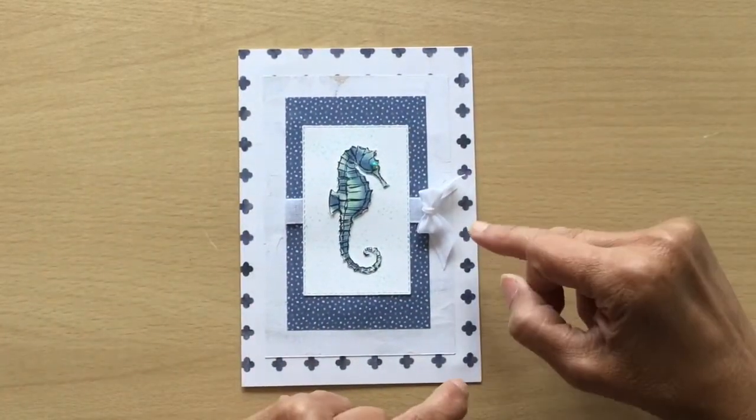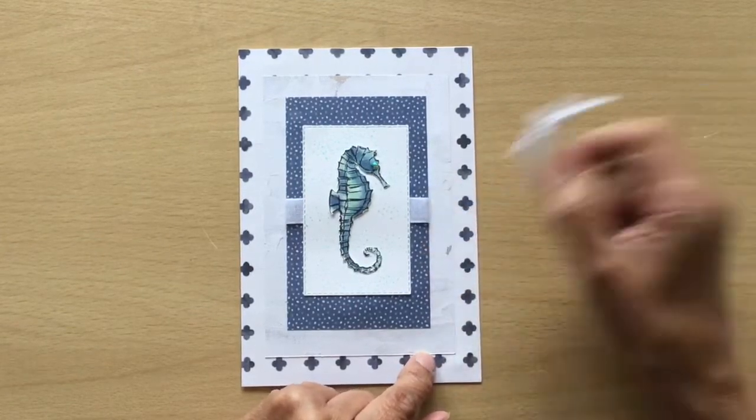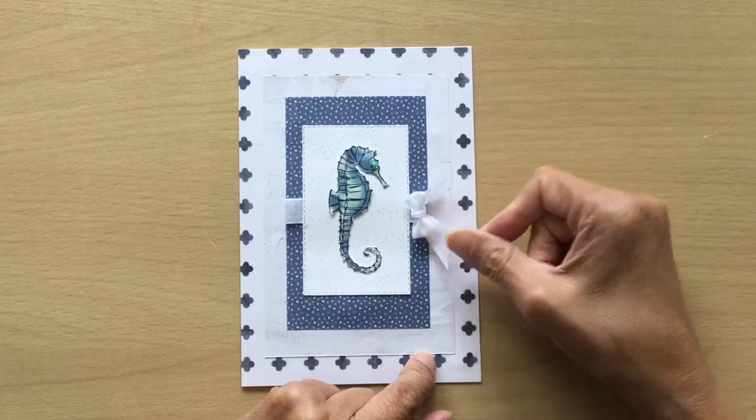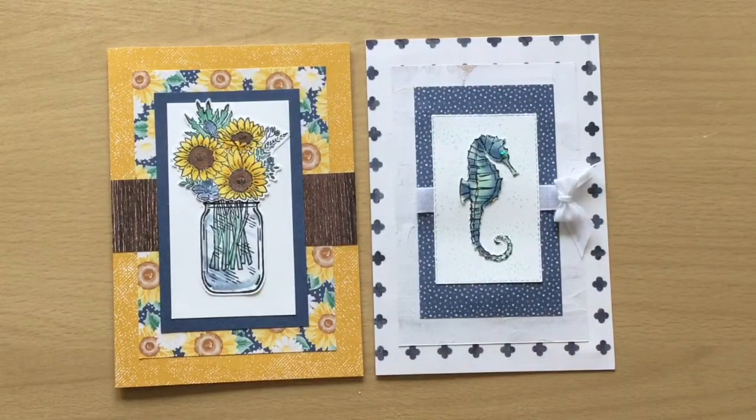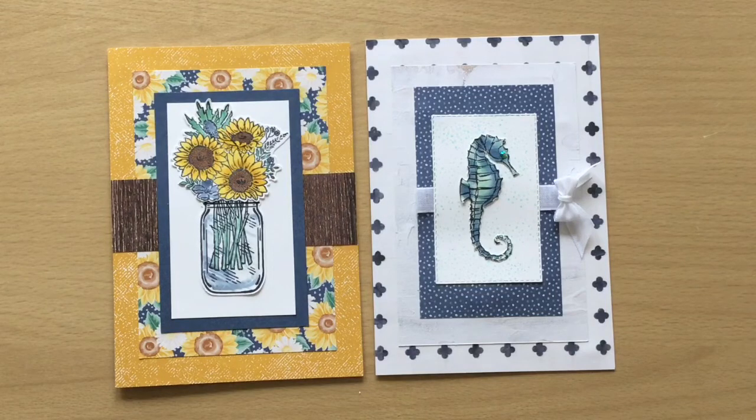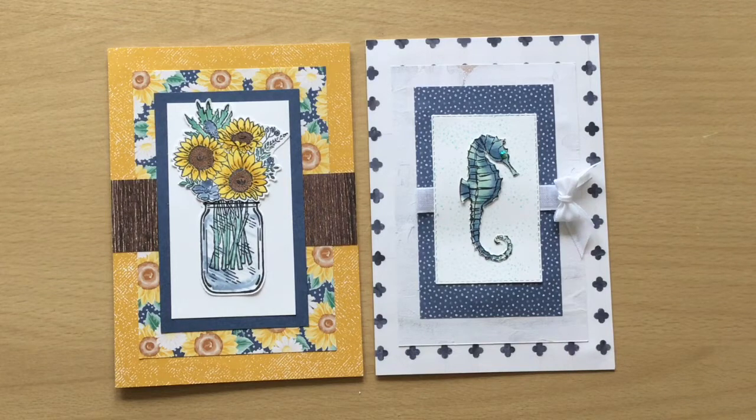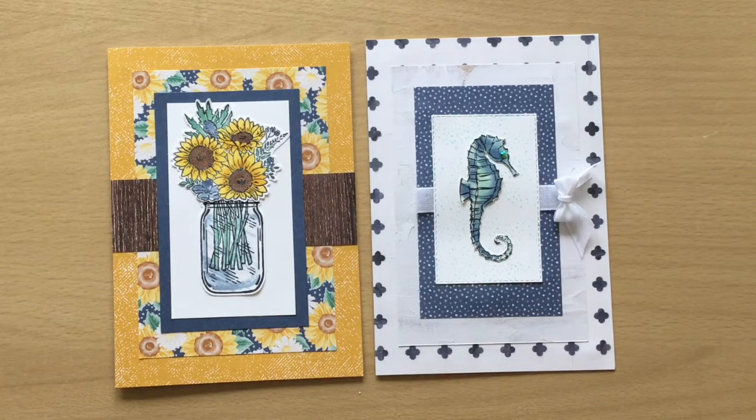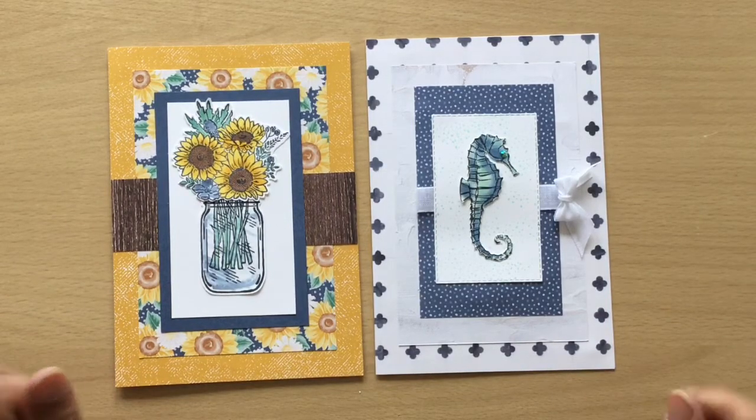And here's the finished card. Now I have made a bow to put on there but I can't decide if I like it or not so I've not stuck it on yet, so it's a possibility. And here are the two cards side by side, very very similar but obviously very different because we've used different stamp sets and different colors. I hope you enjoyed watching this video, please give me a thumbs up if you did, and if you haven't already please subscribe to my channel. Thanks for watching.